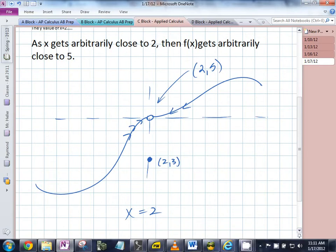If the bug is traveling along this line right here, what is it going to get arbitrarily close to in terms of a height? 5. If it's approaching from this side, what height is it going to get arbitrarily close to? 5. Does it know about this point? No. Does it care about this point? No. It does not matter what the value is at what you're approaching. It's irrelevant.